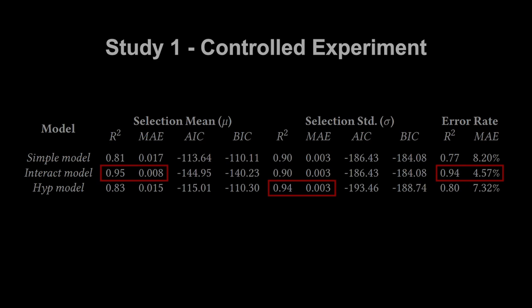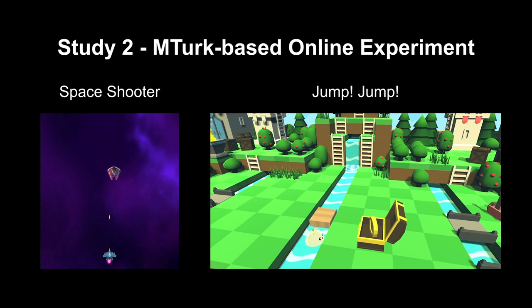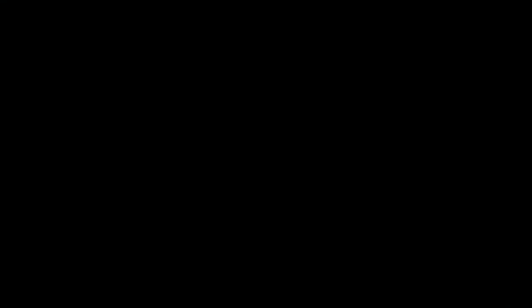We further conducted a second MTurk-based online study to explore the generalizability of the models and conclusions. To achieve that, we built two game applications: a simplified space shooter game where users control a spaceship to shoot down enemies with different sizes, speeds, and distances, and a game that requires players to control different characters to get to gold coins across the river by jumping onto a moving block. We showed that our models can still provide helpful estimations in scenarios with more complex visual encodings, larger parameter ranges, and less controlled environments.